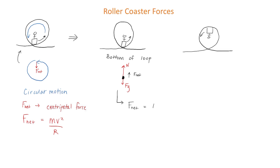Now let's make an F_net equation, which is the sum of all the forces acting on the rider. We have F_net = N - F_g. Since F_net is the centripetal force we can replace it with mv²/r, and we can replace the force of gravity with mg. We then rearrange and isolate for the normal force.